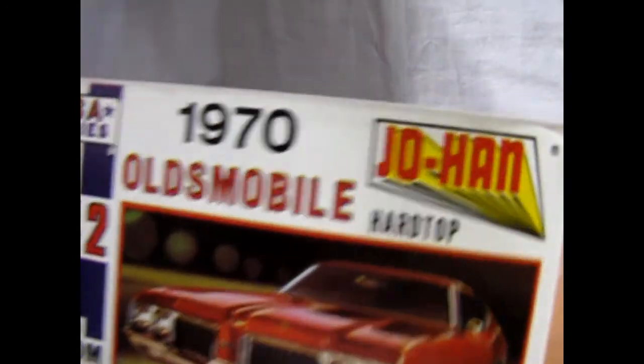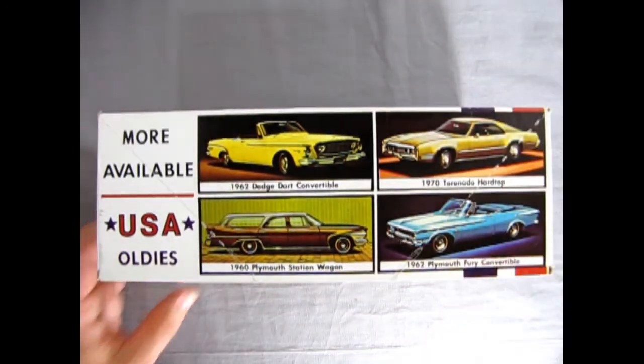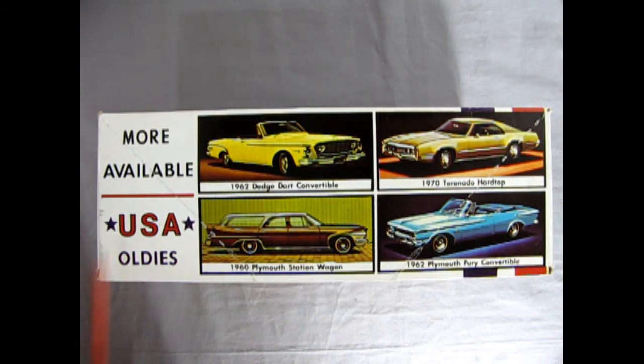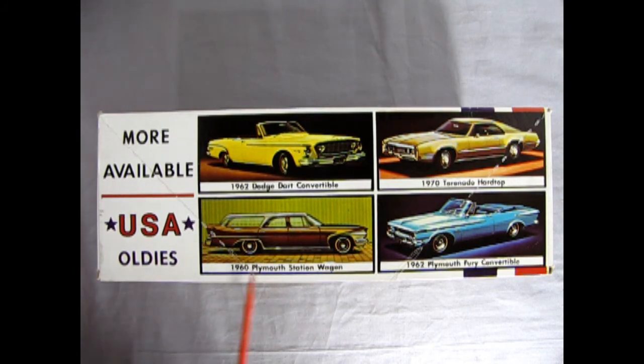On the sides we are treated to more available USA Oldies. We've got our 62 Dodge Dart Convertible, our 70 Tornado Hardtop which I do have one of these as well, the 62 Plymouth Fury Convertible I've built, and our 60 Plymouth Satellite Wagon. This one shows the stock version but I have reviewed the police one for 1960. Another kit loaned by John.